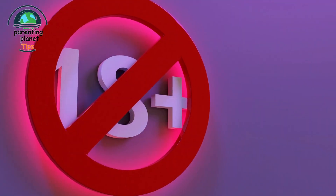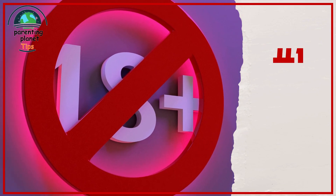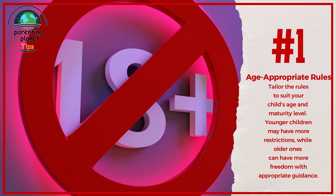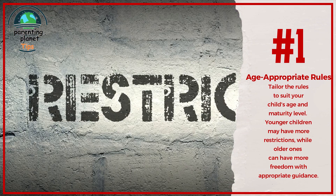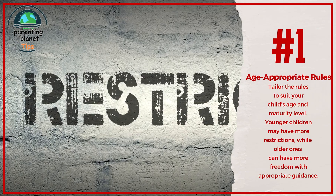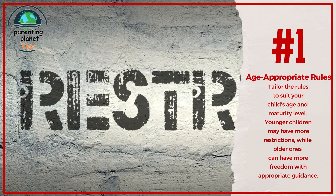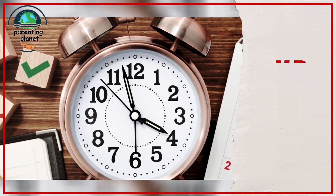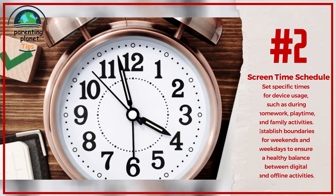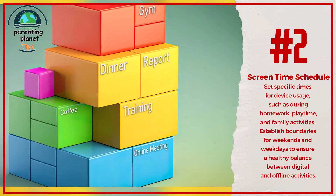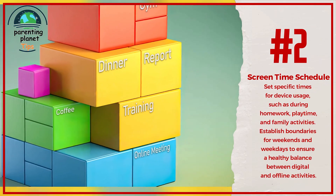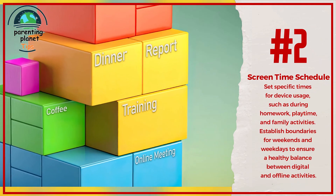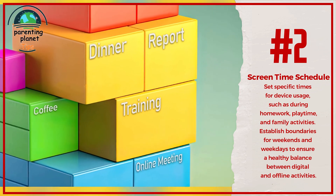Age-appropriate rules: Tailor the rules to suit your child's age and maturity level. Younger children may have more restrictions, while older ones can have more freedom with appropriate guidance. Screen time schedule: Set specific times for device usage, such as during homework, playtime, and family activities. Establish boundaries for weekends and weekdays to ensure a healthy balance between digital and offline activities.